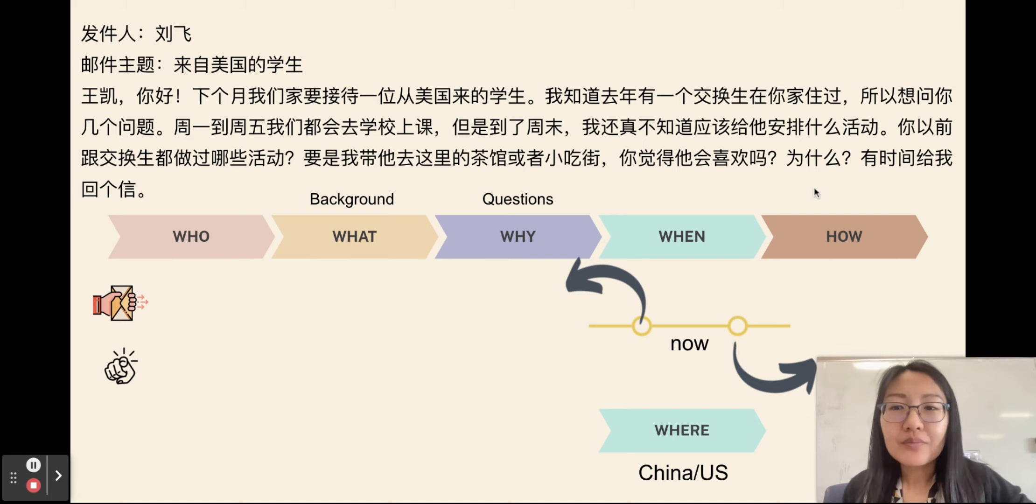And then, where. So, this one, 你以前跟交换生做过哪些活动. 你可以在中国, 比如说, 王凯是住在中国的, 所以我可以带着交换生在中国做了什么, 也可以, 王凯你是在美国的. 如果一个中国的交换生, a Chinese exchange student come to America, so what activity you have done? Another one is, 要是我带他去这里的, this 这里 means China. 这里的茶馆或小吃街, 这里是中国的茶馆或小吃街, 你觉得他会喜欢吗, 为什么. How, here, how is, you need to explain your answer. That is how you analyze the email.